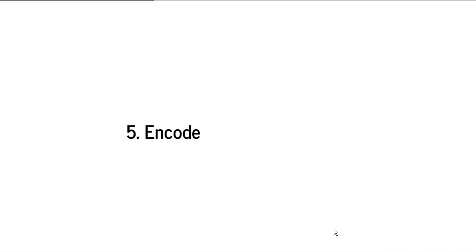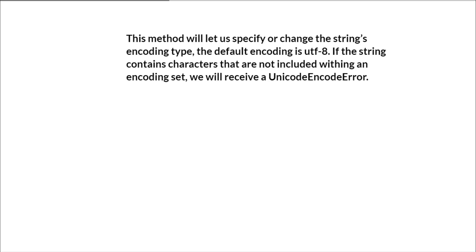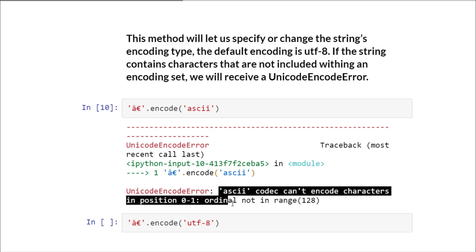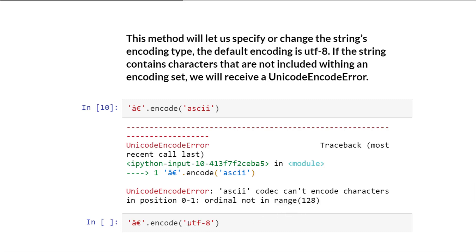Then we have the encode method. This encode method lets us specify or change the string's encoding type. The default encoding is UTF-8. If the string contains characters not included within the encoding set, we will receive a UnicodeEncodeError. For example, with some special characters copied from the internet, if you try to encode in ASCII we get a UnicodeEncodeError saying the ASCII codec can't encode characters in position 0 to 1 — ordinal not in range 128. If you try to encode it in UTF-8, it will be encoded successfully.